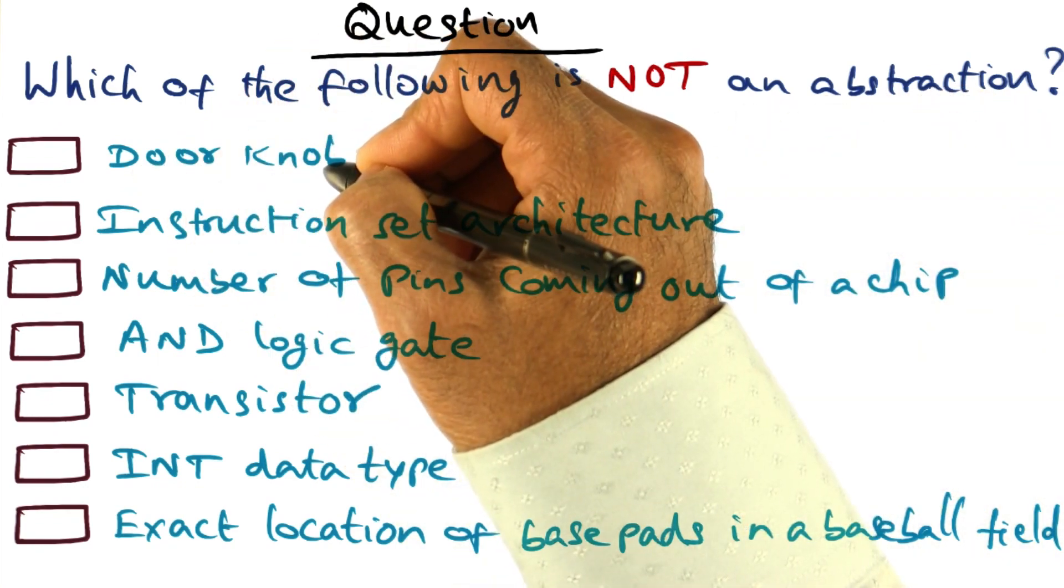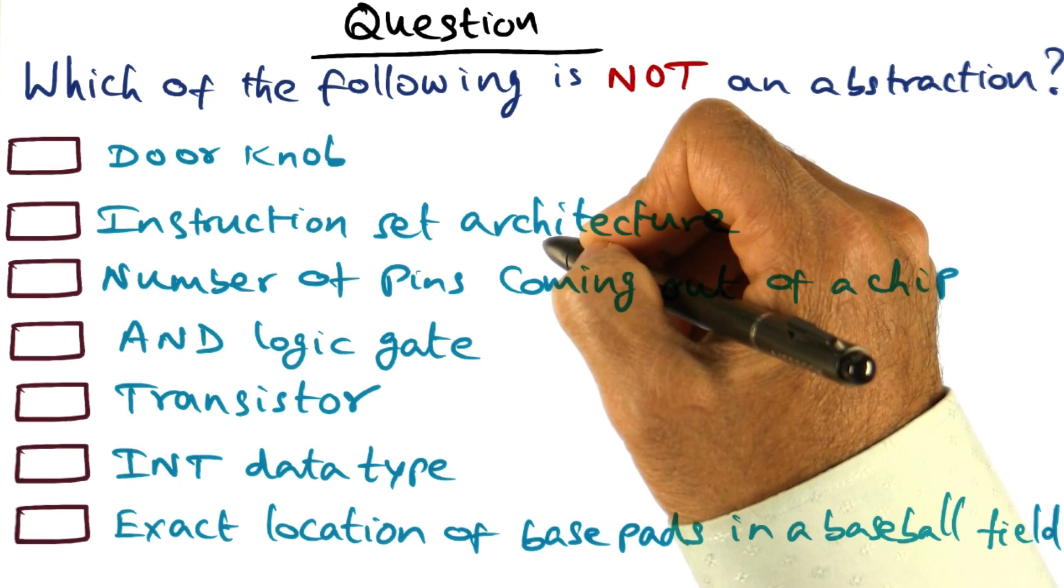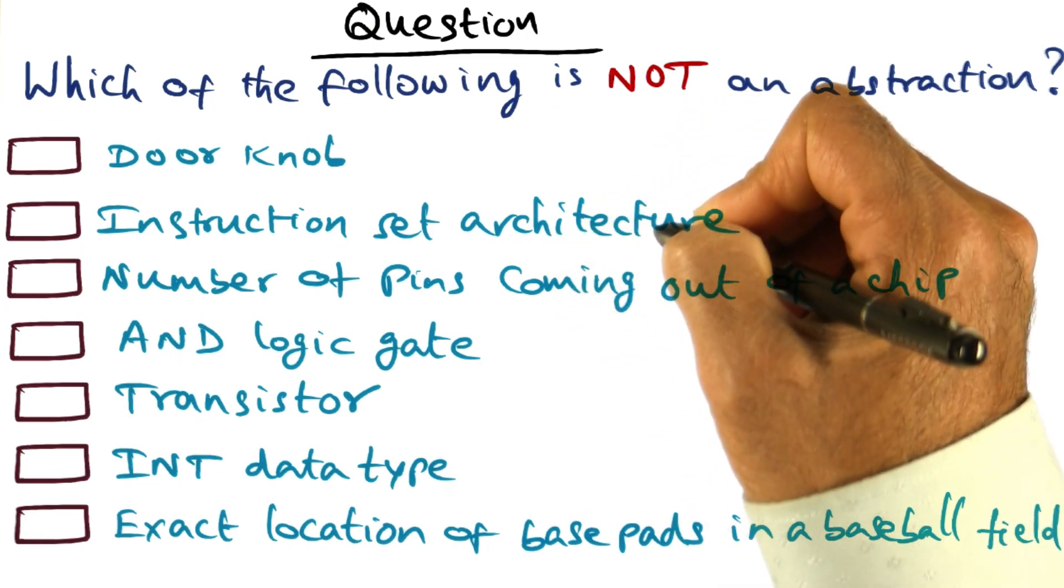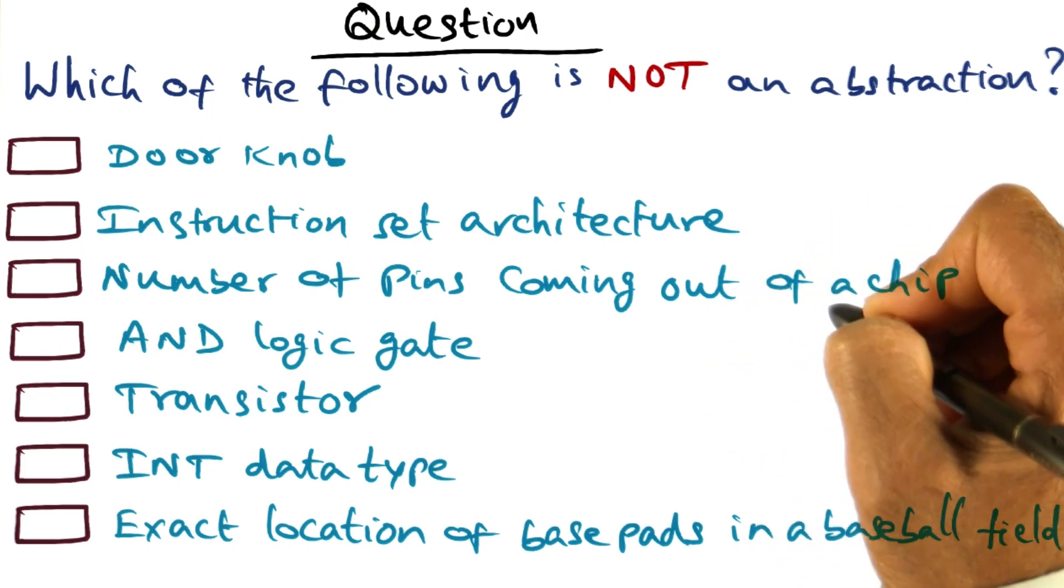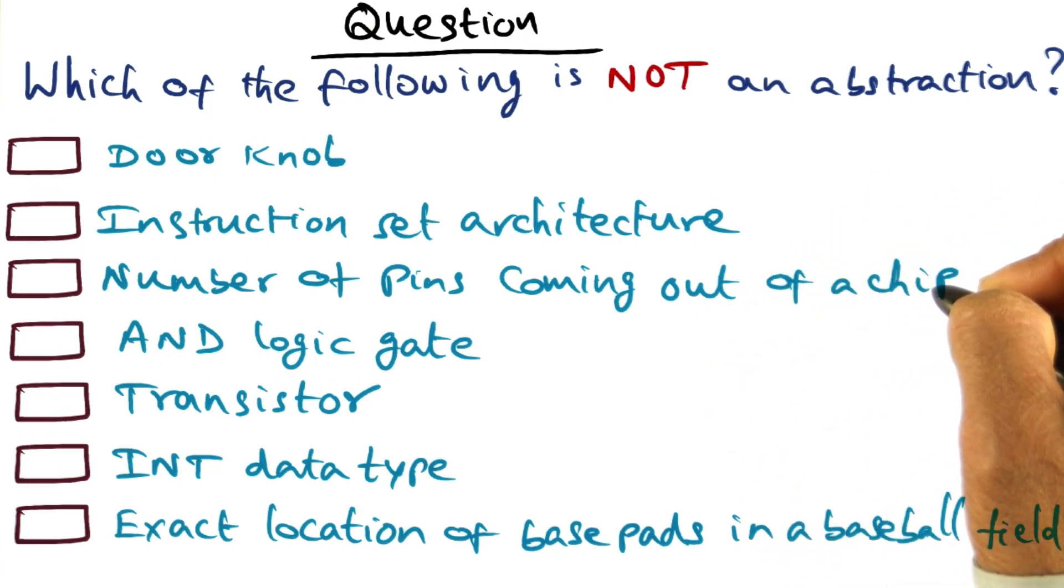The first choice I have is a doorknob. The second choice I have for you is instruction set architecture. The third choice I have is the number of pins coming out of a chip, like a processor chip.